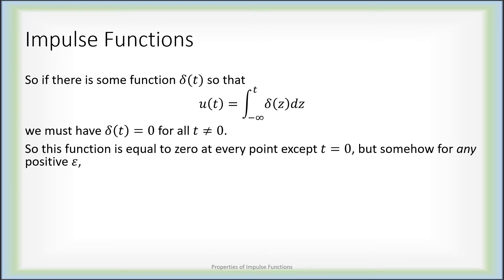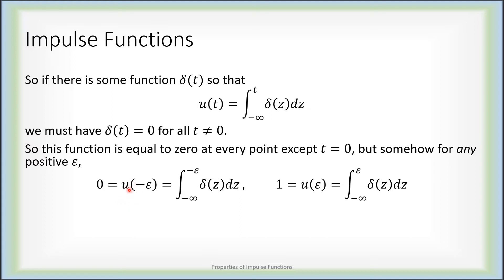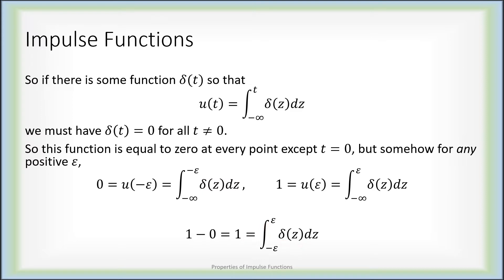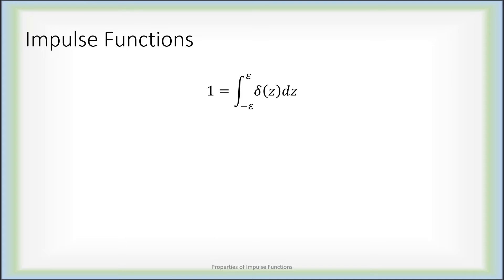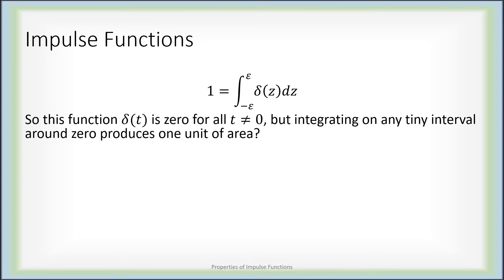So delta is zero everywhere except zero. But consider any positive epsilon: if I evaluate u at a negative number, I get zero, but if I evaluate u at a positive number, I have one. Taking the difference of these two integrals gives 1 minus 0 = 1, and that difference equals the integral from minus epsilon to epsilon of delta of z dz. So for any positive epsilon, no matter how small, the integral from minus epsilon to epsilon must be 1.